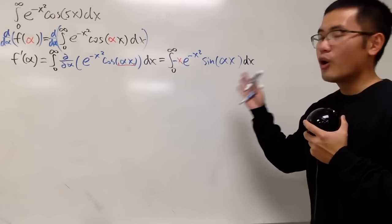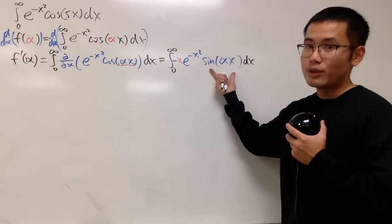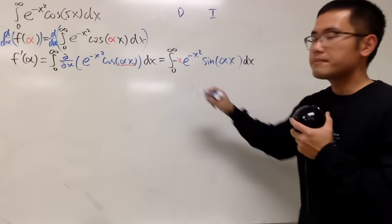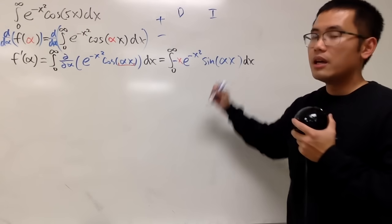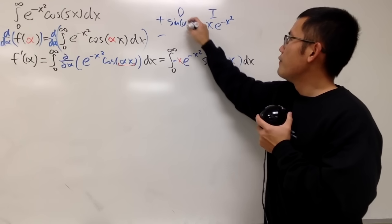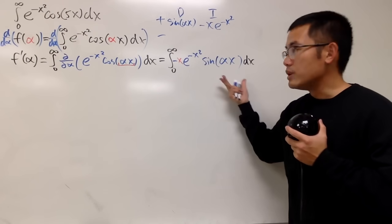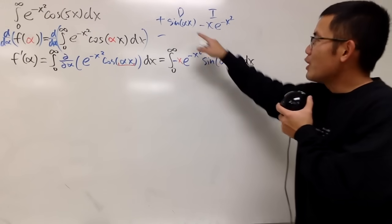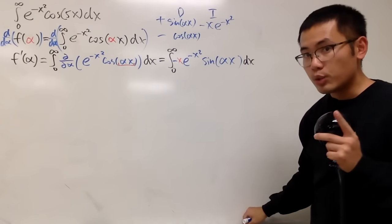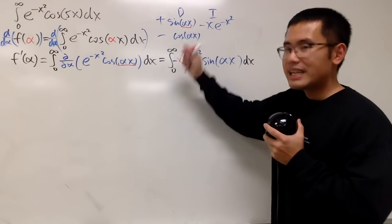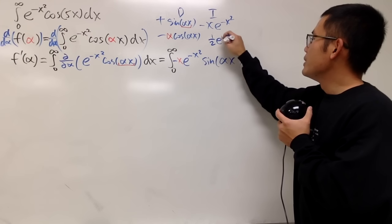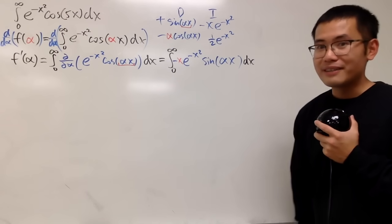This is wonderful because we can integrate one part and differentiate the other. Let's do the DI setup for integration by parts. We have: differentiating sine of alpha x gives cosine of alpha x, and by the chain rule we multiply by alpha. Integrating negative x e to the negative x squared — we can do a u-substitution in our head — and we end up with one half e to the negative x squared, thanks to the x on the outside.